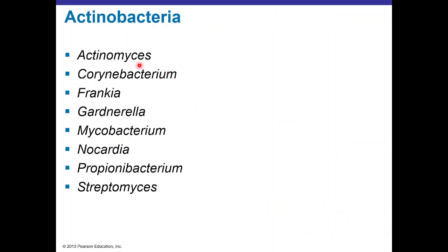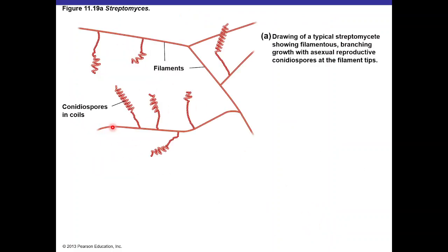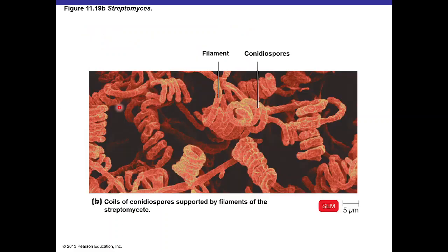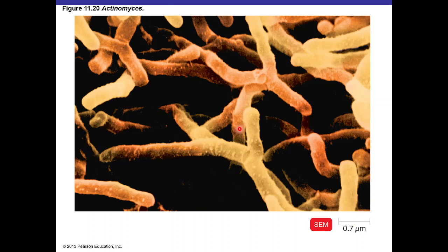Streptomyces is a filamentous bacteria with conidiospores in coils that can fragment, release conidiospores, and form vegetative forms — as shown in a scanning electron micrograph displaying the filaments and conidiospores. Actinomyces can infect skin in humans.